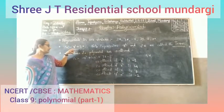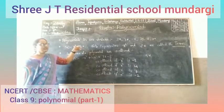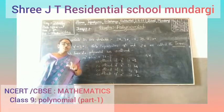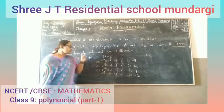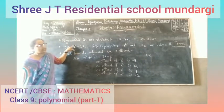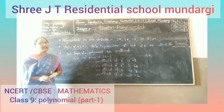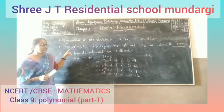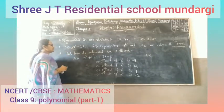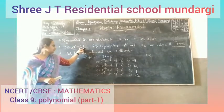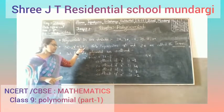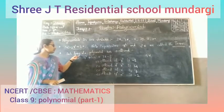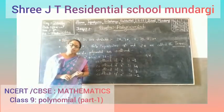Each polynomial has coefficients. For example, in x squared plus 2x, the coefficient of x squared is 1, and the coefficient of x is 2. So each part of a polynomial has a coefficient.